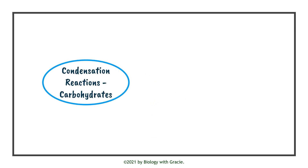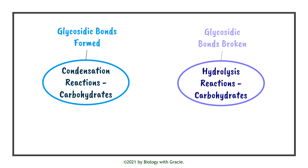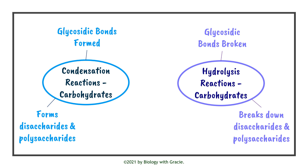To summarise: in condensation reactions, glycosidic bonds are formed, whereas in hydrolysis reactions, glycosidic bonds are broken. In condensation reactions, disaccharides and polysaccharides are formed, whereas hydrolysis results in the breakdown of disaccharides and polysaccharides, producing monosaccharides. In condensation reactions, a H₂O molecule is released, whereas in hydrolysis reactions, H₂O is added.